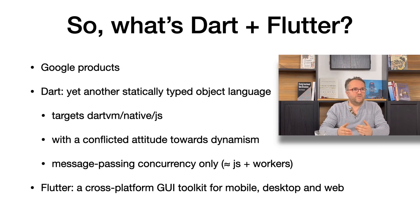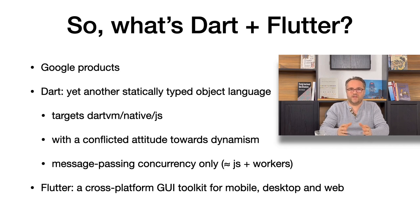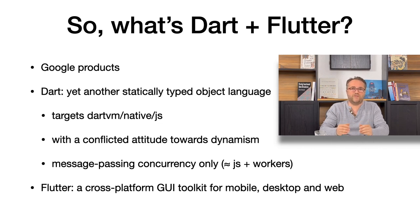Maybe you are like me and have no idea or very faint idea of what Dart and Flutter are. They are both Google products. Dart is kind of a very typical static language. It is able to target either JavaScript, its own VM, or native code, be it X64 or ARM. Another interesting part is that it seems to have a conflicted relationship towards dynamism, maybe because of its history and how it grew as a language. Because initially it targeted JavaScript, its concurrency story is almost the same as JavaScript: you have workers communicating through messages and you don't have shared memory concurrency.